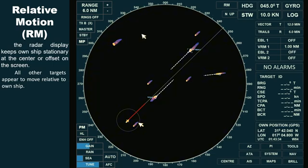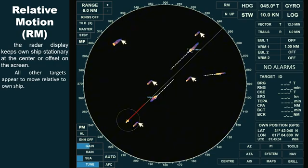This occurs because, in relative motion, the radar treats the own ship as stationary, while everything else appears to move around it. As a result, the trails of stationary objects will be shown pointing in the direction opposite to own ship's heading.